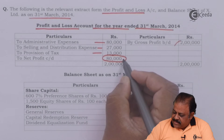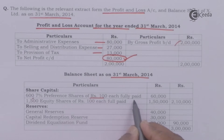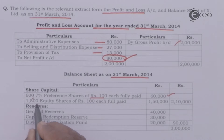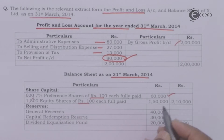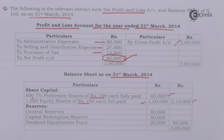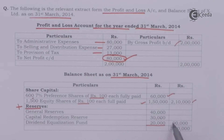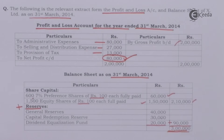Balance sheet as on 31st March 2014 — share capital: 607 percent preference shares of rupees 100 each fully paid: rupees 60,000; 1,500 equity shares of rupees 100 each fully paid: rupees 1,50,000; total share capital: rupees 2,10,000. Reserves: general reserve rupees 40,000; capital redemption reserve rupees 30,000; dividend equalization fund rupees 20,000; total reserves rupees 90,000. Total proprietors fund: rupees 2,10,000 plus rupees 90,000 equals rupees 3,00,000.